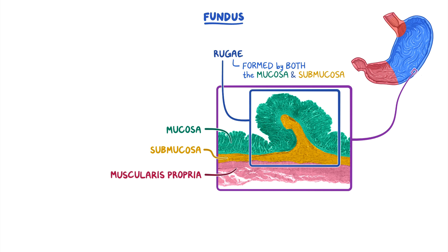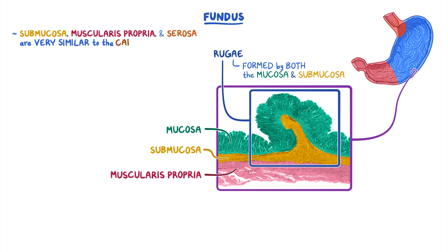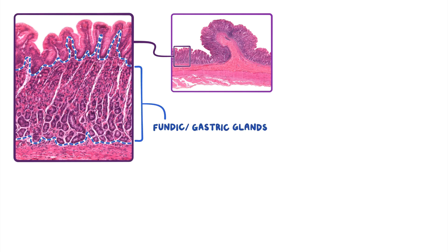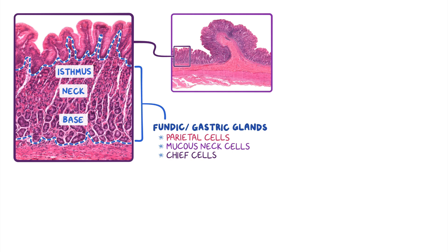The rugai allow the stomach to expand after food or liquid is consumed. The submucosa, muscularis propria, and serosa are very similar to the cardiac stomach. While the fundic mucosa may look similar to the cardiac mucosa, the glands present are different — instead of cardiac glands, the gastric pits join with fundic or gastric glands, which consist of three major cell types: parietal cells, mucus neck cells, and chief cells. The gastric glands are broken down into three regions: the isthmus, neck, and base.